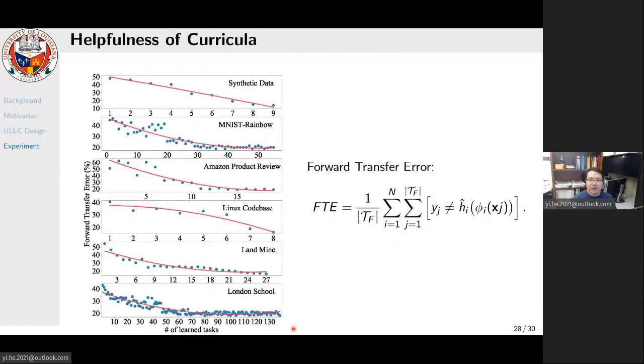We define a new metric termed forward transfer error (FTE) to validate whether the curriculum organized by our algorithm is beneficial. In general, the smaller the error, the more knowledgeable the learner becomes after learning a task. We can see decreasing trends in all datasets. This means our curriculum truly helps the learner to gain knowledge and get ready for originally disparate tasks.